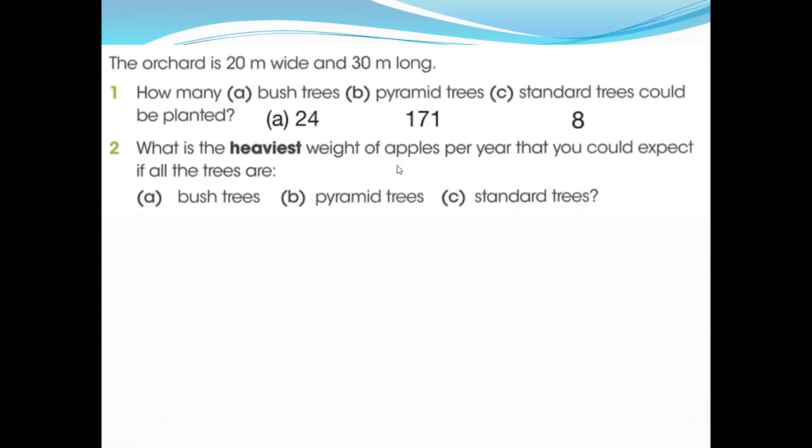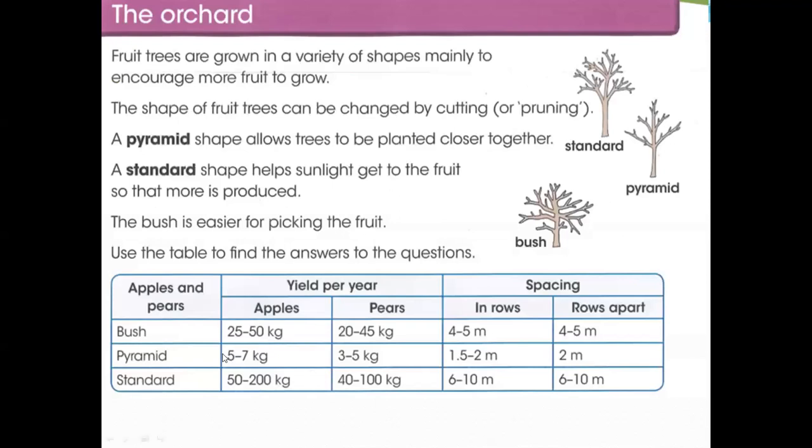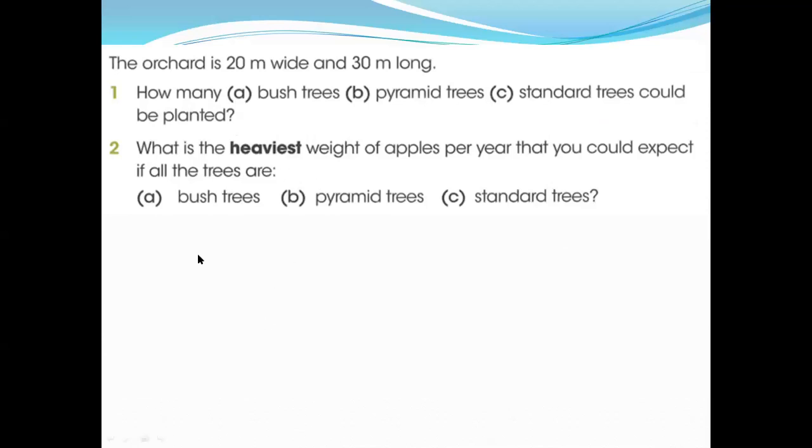What is the heaviest weight of apple per year? First of all, you know how many trees you can put in the ground. After this, the heaviest weight of apple per year. It's easy now. You know the trees, how many trees you can put in row and column. Simple, multiply 24 with the apple per year in bush trees. You can see 24 multiply with 50. This is the heaviest, this is the highest in apple tree. 24 multiply 50, we will get 1200 kg.